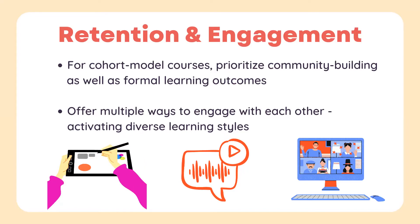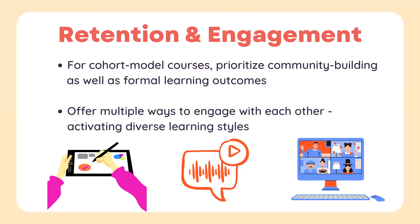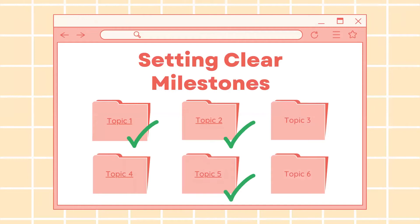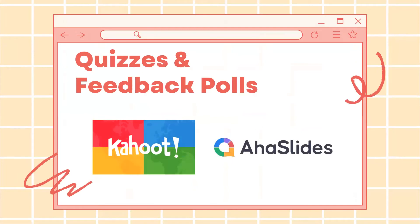Try to offer multiple ways for students to engage with each other, activating diverse learning styles. You can encourage the use of online whiteboard spaces for visual learners, use discussion boards, or ask for reflections using voice notes or videos as alternatives to text. Just like in-person classrooms, students often feel more invested when they have a clear understanding of the progress they are making. Help them by setting clear milestones with associated achievements. One easy way to do that is through the use of quizzes and games throughout your course. There are a lot of fun ways to check for understanding that avoids the stress that comes with the word 'quiz.' Kahoot and AHA Slides are two fun platforms that give students a way to check what they know and also give you feedback on what students are struggling with.